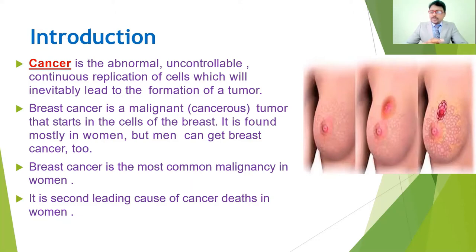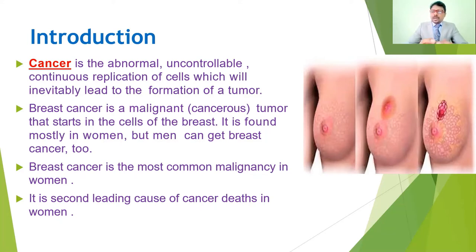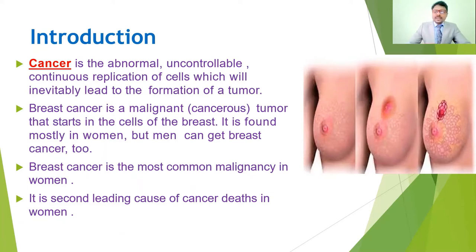If this abnormal cell development takes place in the breast tissues, it is called breast cancer. The breast, also called the mammary gland, is composed of adipose tissue. Breast cancer is a malignant tumor that starts in the cells of the breast. It is found mostly in women, but men can also get breast cancer. Around one percent of breast cancers are male breast cancers.